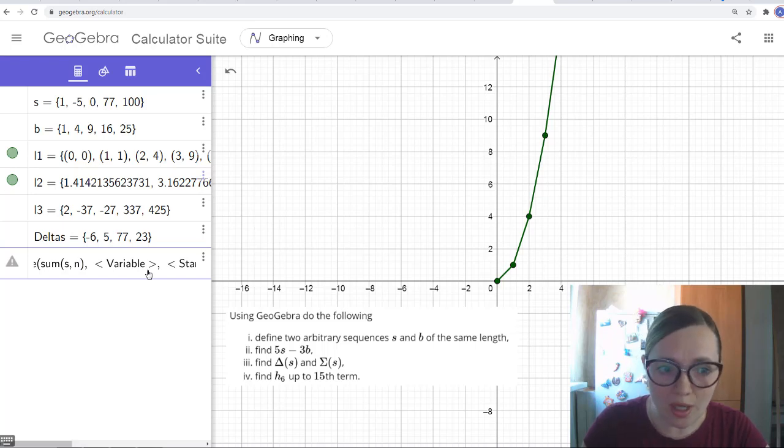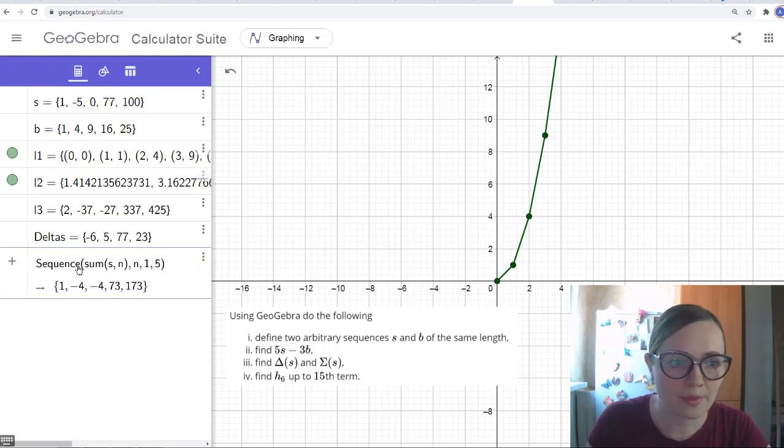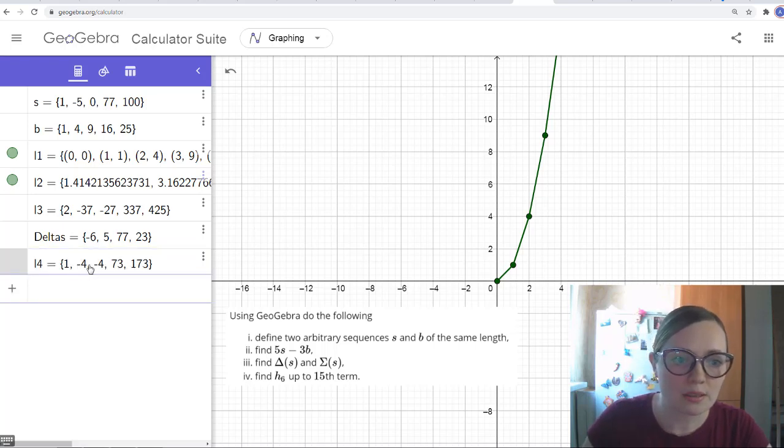So the first one will be the sum of just one term. So the first term of this sequence will be just s(1), which is 1. The second term, the sum of 1 and -5. The third term, the sum of these three, and so on. The variable is n, and we start with 1 until the end value will be 5, right? Because the last one will be the sum of 5 terms.